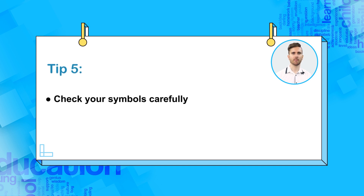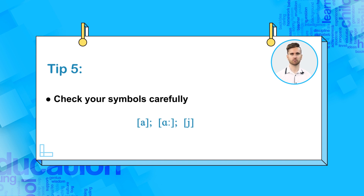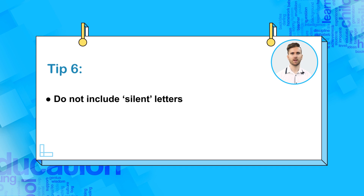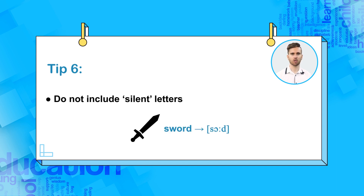Tip five: many symbols look very similar to other IPA symbols and also to English letters. Make sure you write the correct symbol. For example, A is a different sound to R, and Y is not the first consonant in 'job'. Tip six: do not include silent letters. Remember that silent letters are a feature of English spelling, not English pronunciation. Thus, don't write W in the word 'sword' (S-W-O-R-D), because it is pronounced 'sword'.